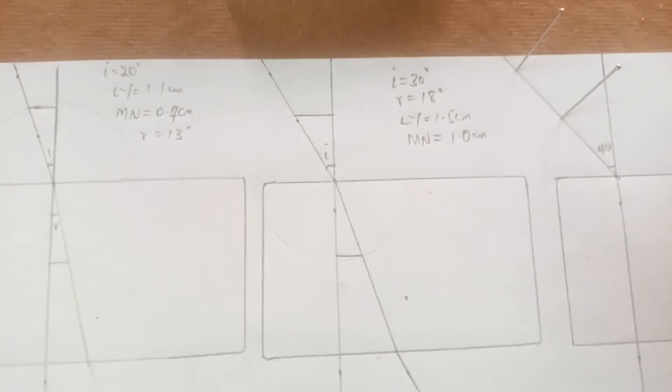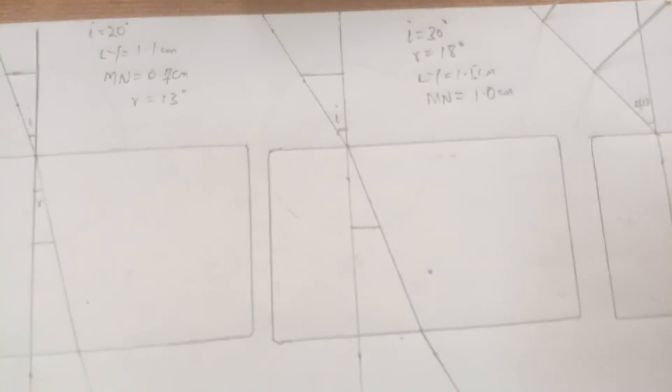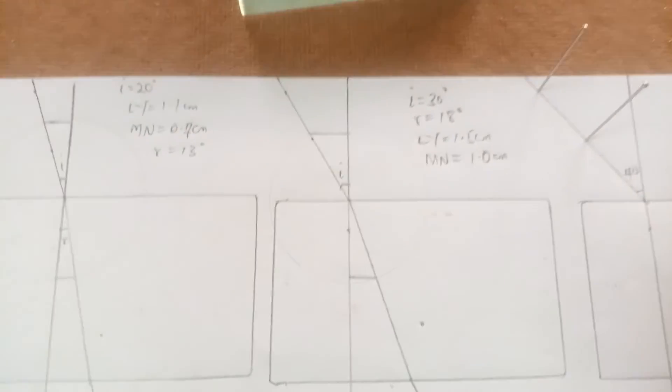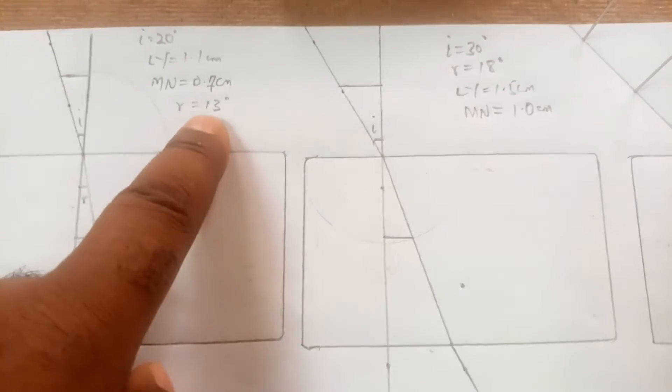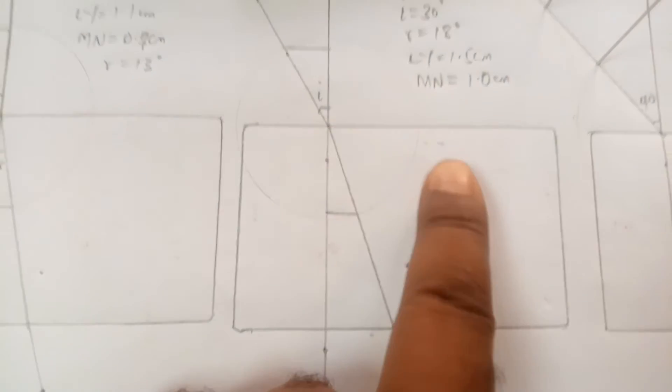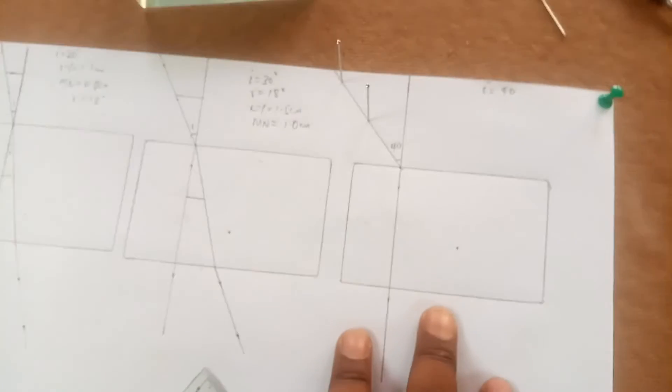So just for continuation and confirmation, here is our second reading here. I have the I measured out to be 30. After I finished measurement I found my R, the angle of refraction, to be 18. That's an increment of 5 from the first one. And then I found my LY to be equal to 1.5 as against 1.1 from the first one, and then here I have MN which is equal to 1 cm as against 0.7 cm from the first one.